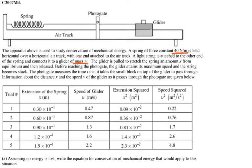The glider is pulled to stretch the spring an amount of X from its equilibrium and then released. Before reaching the photogate, so here is the photogate, the glider attains a maximum speed and string becomes slack. The photogate measures the time T that it takes the small block on top of the glider to pass through. Information about the distance X and the speed and velocity of the glider passing through the photogate is given below.